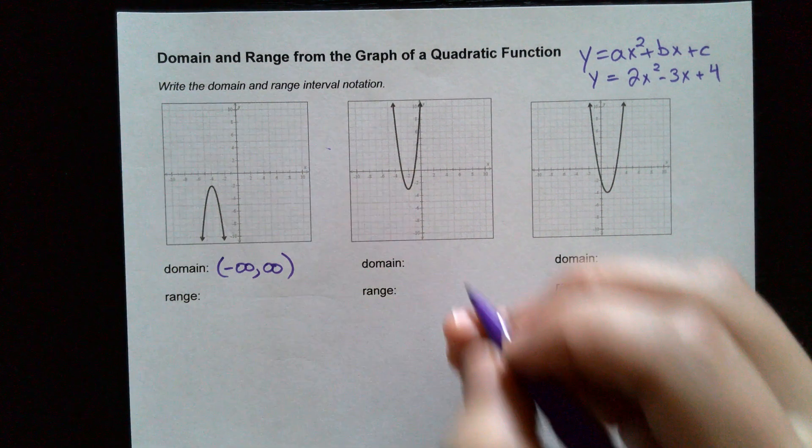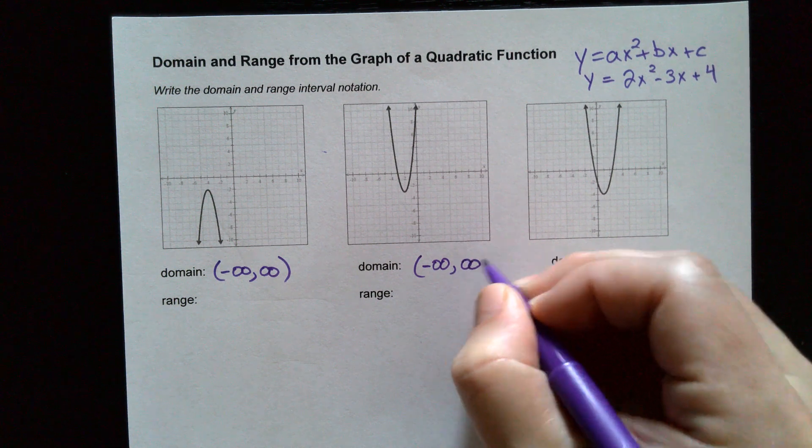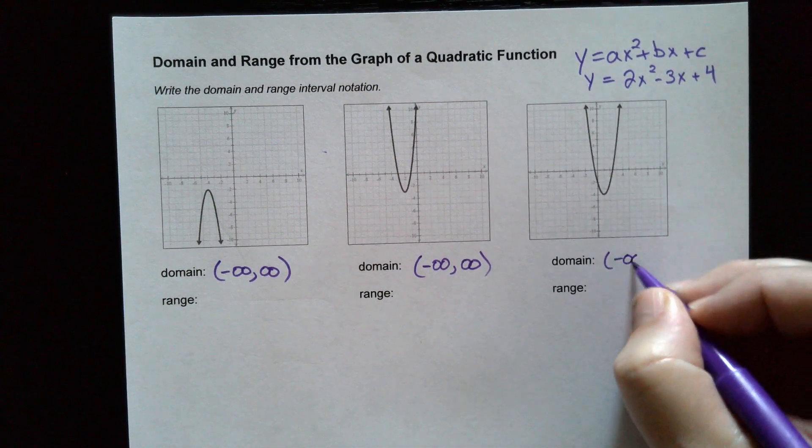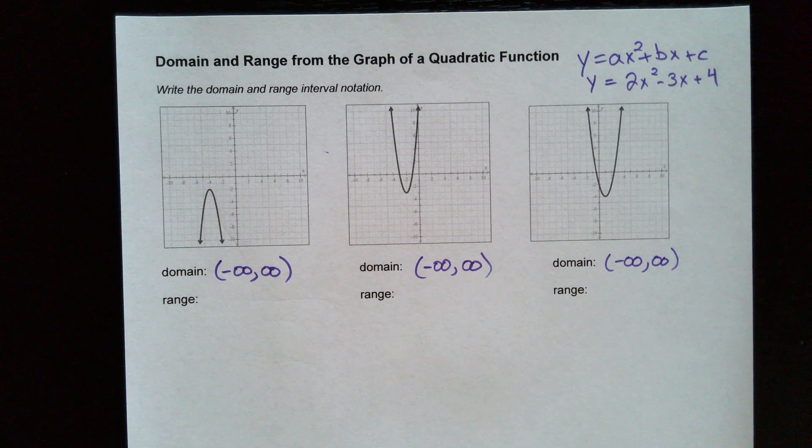And that is true with every quadratic. So I can go ahead and write down on all these negative infinity to positive infinity for the domain. Now, the range depends on where the vertex is.